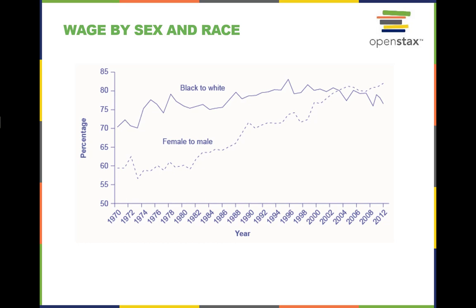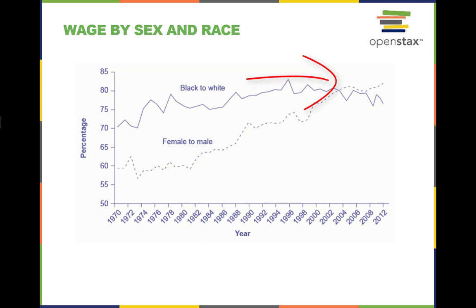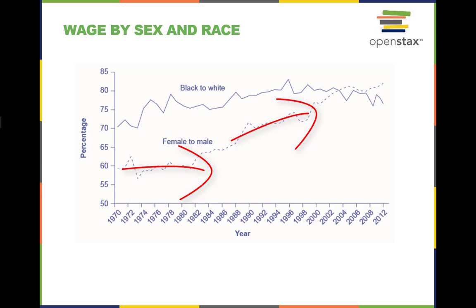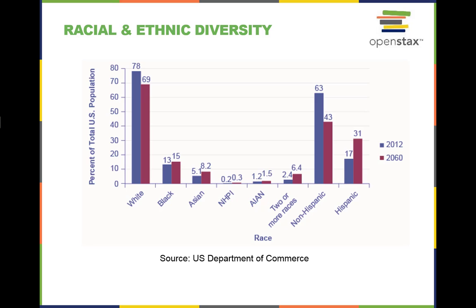In the labor market, race and gender discrimination has had an impact on wages earned. The ratio of wages for black workers to white workers rose substantially in the late 1960s and through the 1970s, but has not changed much since then. The ratio of wages for female to male workers changed little through the 1970s, but has risen substantially since the 1980s. In both cases, a gap remains between the average wages of black and white workers and between female and male workers. Discrimination has not only affected wages, but overall workforce participation.